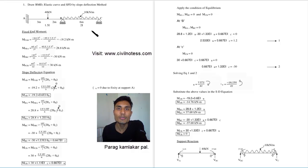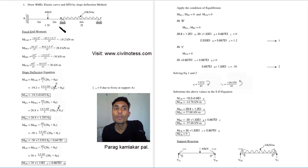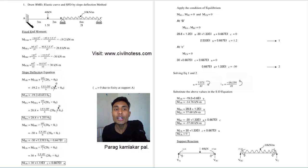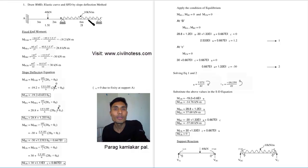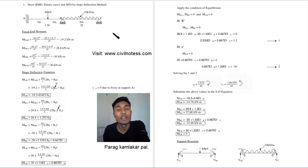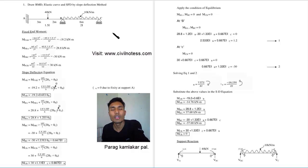In examinations, the theory question is commonly asked. For example, a 40 kilonewton point load is provided at 3 meters from fixed support A, a hinge support at point B is at 5 meter distance, and over the 6 meter span BC a 10 kilonewton per meter UDL is provided. This type of theoretical question can appear for the slope deflection method or other methods like cantilever, Clapeyron's theorem, or Kani's method.